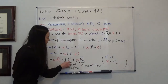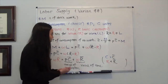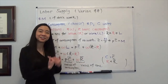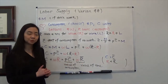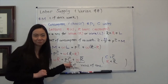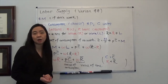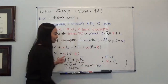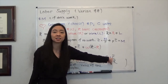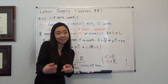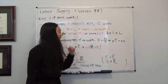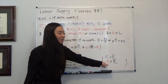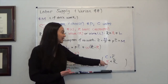So you can treat C bar and R bar as our endowment. We are given R bar hours that we can choose to spend on either leisure or work — that's our time endowment. And C bar is our endowment consumption, coming from the money our parents gave us. Typically, we end up selling some of our time in order to get more consumption, so our final consumption is higher than C bar, and our leisure hours are less than R bar.